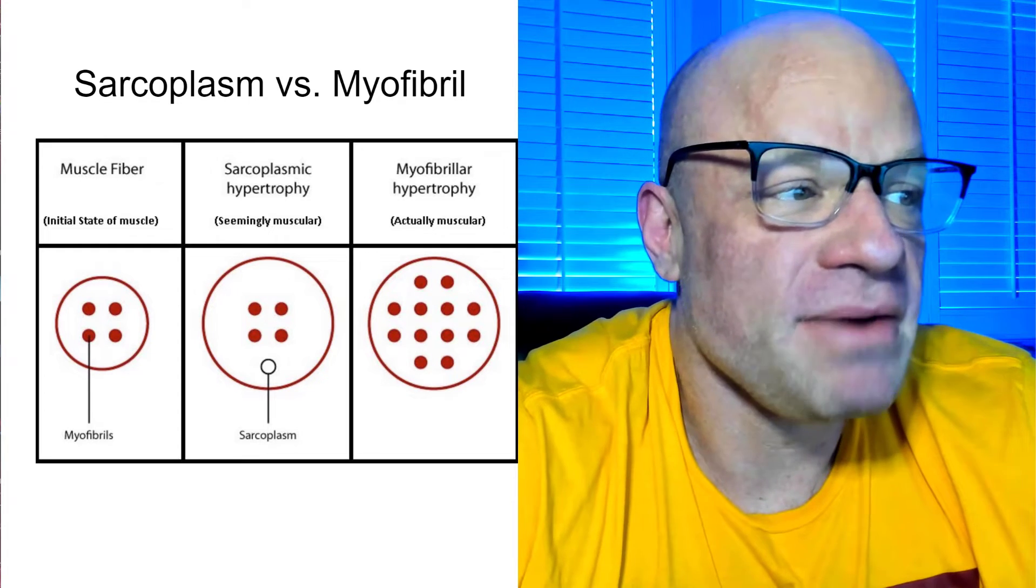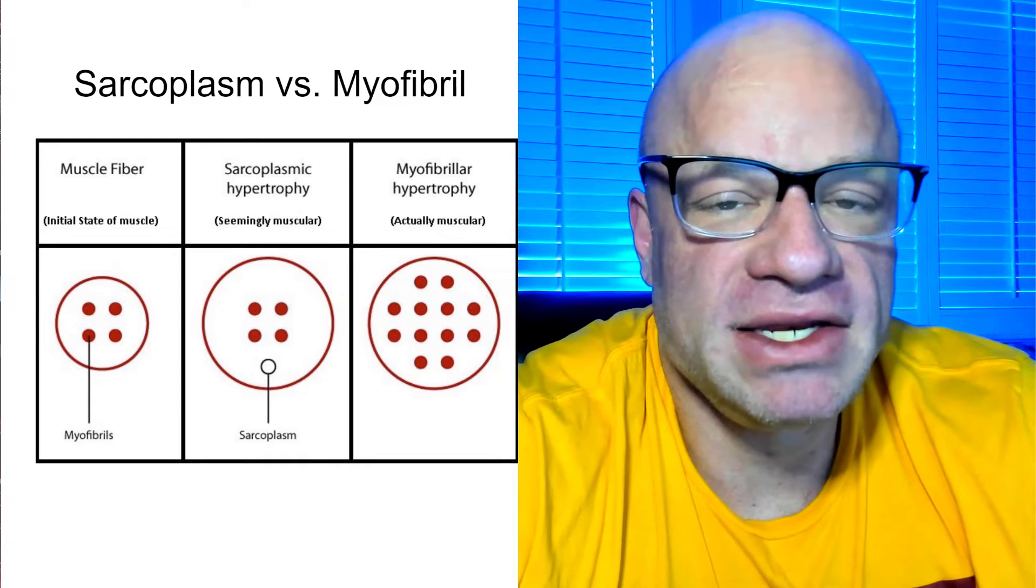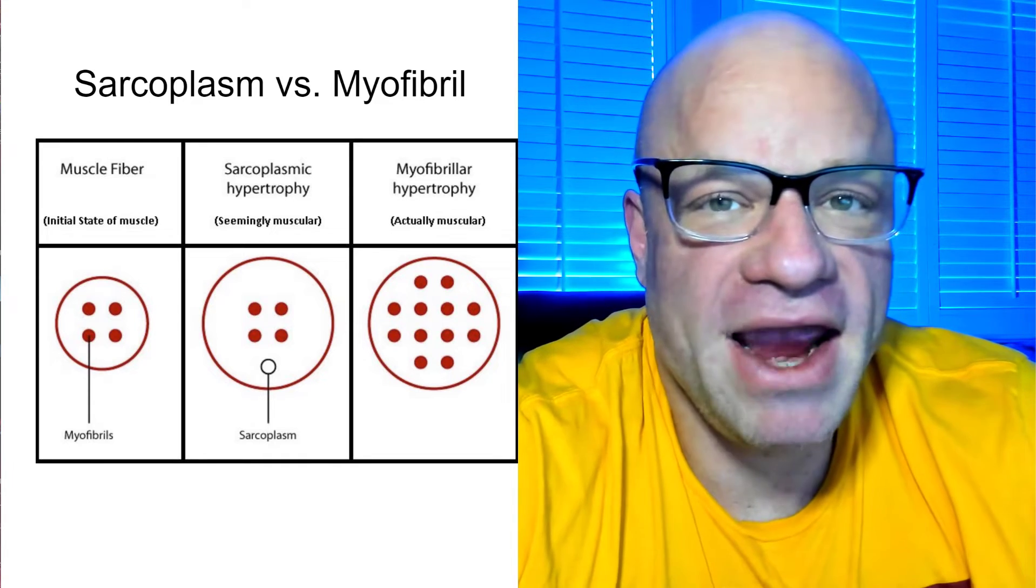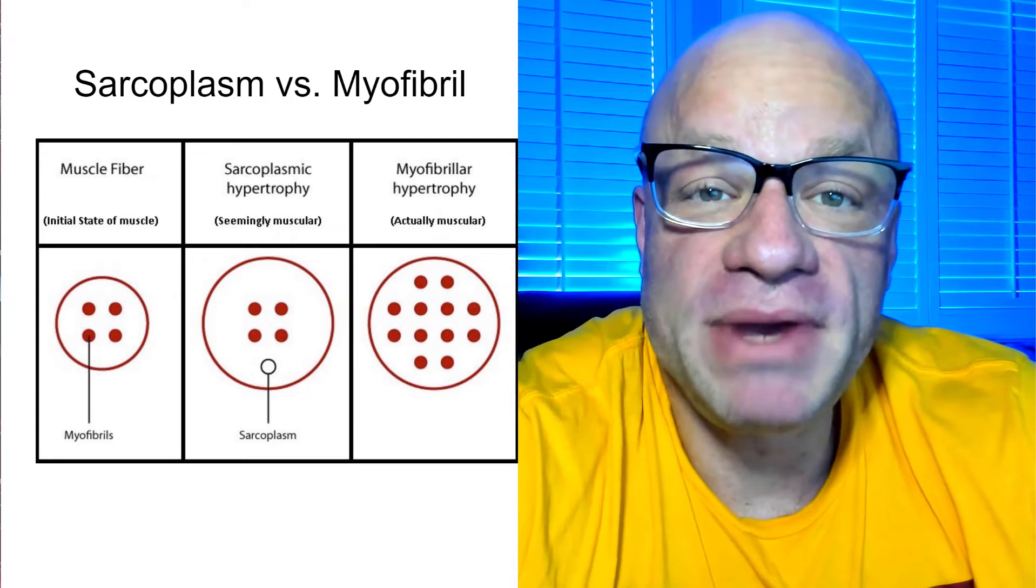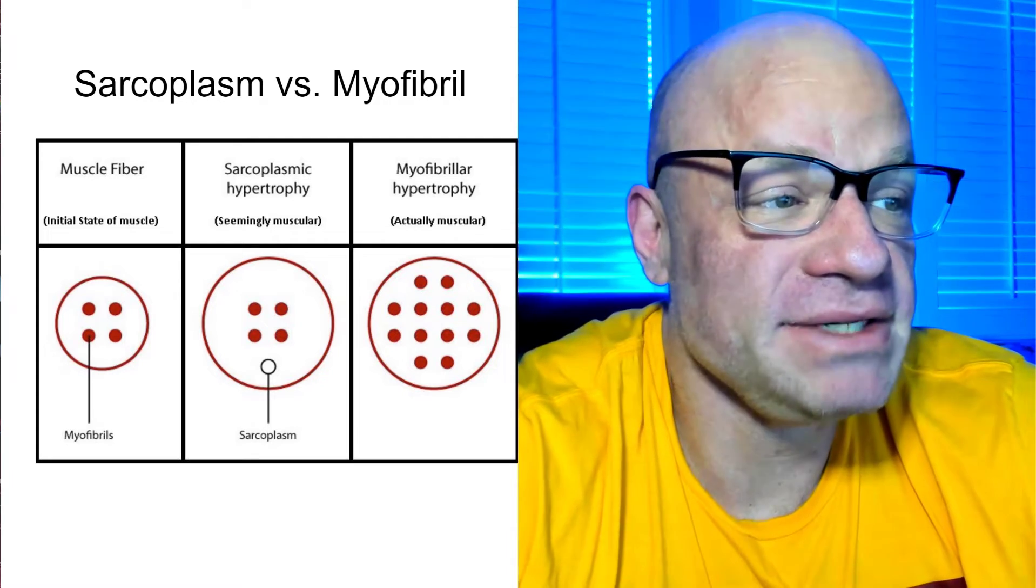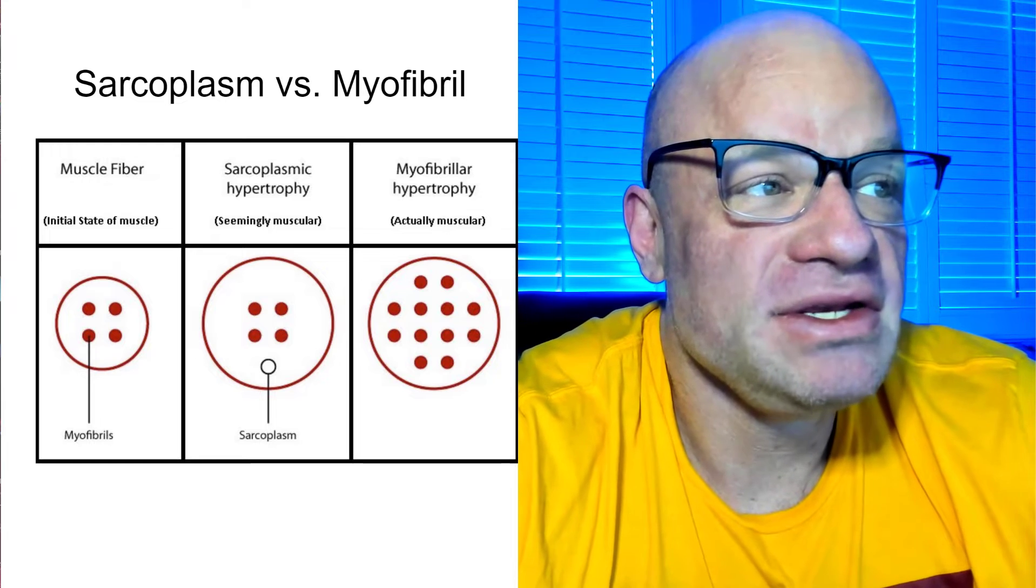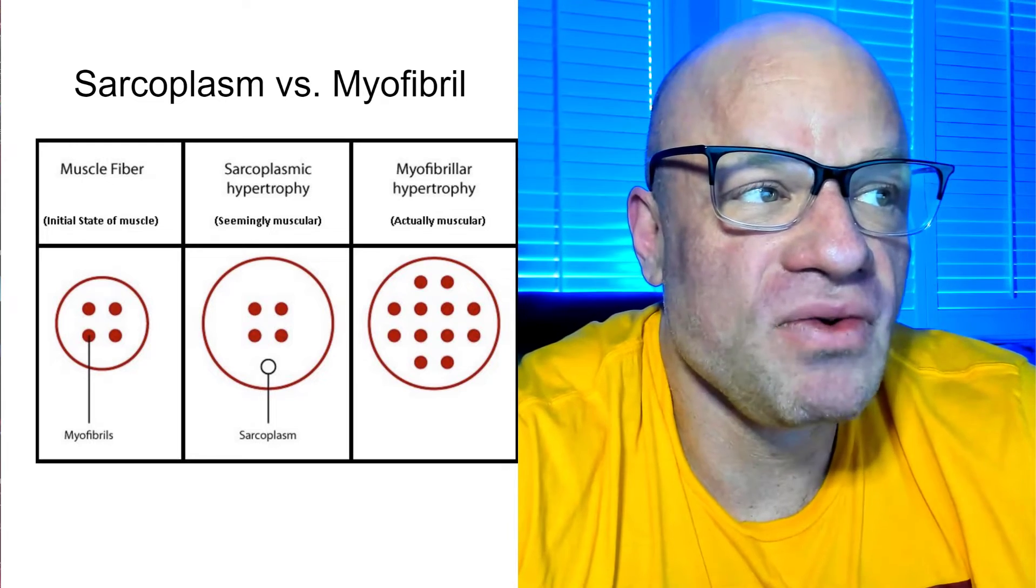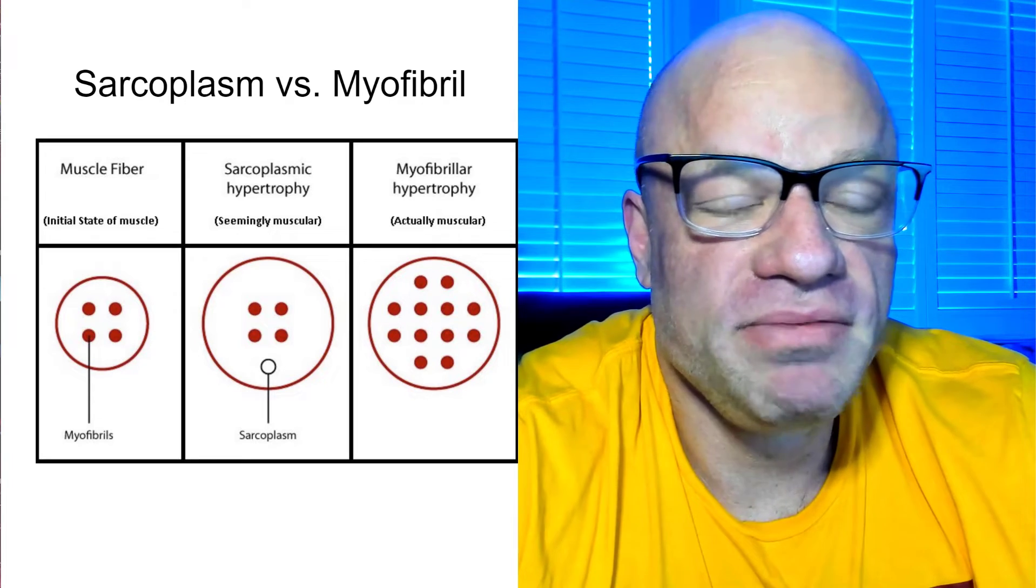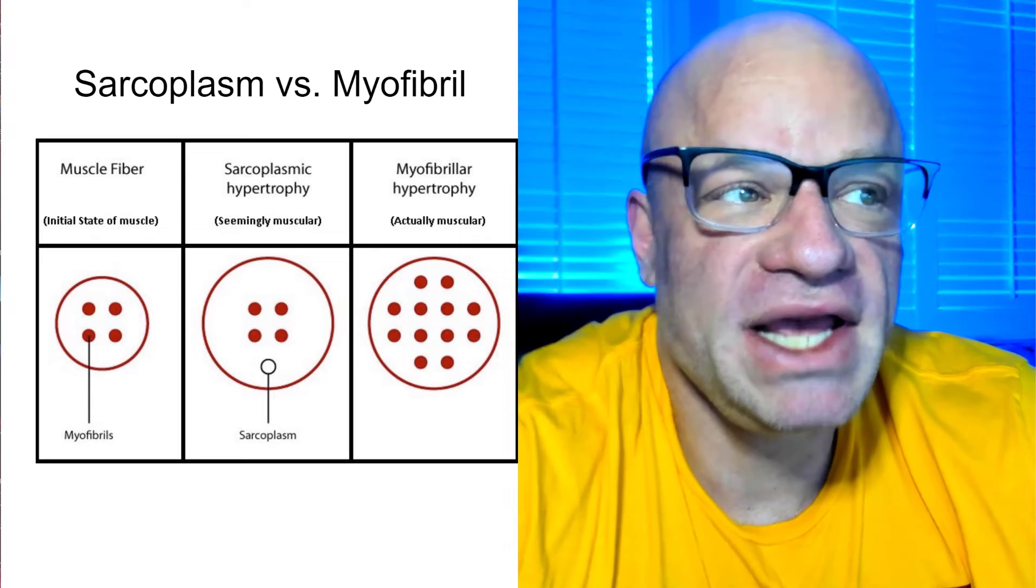The muscle fibers there, the myofibrils that are red, contained inside the muscle fiber, and the white area is the sarcoplasm. If we have an expansion of the sarcoplasm, you can see here in the middle picture, there's no actual increase in the myofibrils, but the sarcoplasm has increased in size.